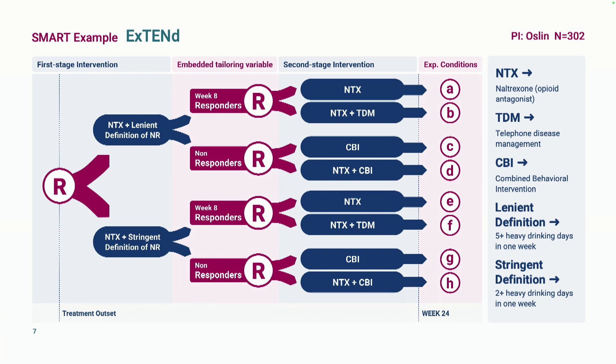If things can happen during any one of those eight weeks, some people are getting longer in stage two. The optimization criteria here is a very good 24-week evaluation. If participants never trigger non-response across all eight-week assessments — whatever definition they were assigned to — they're considered responders. For responders, the strategies are to either continue with naltrexone alone or to continue with naltrexone and add telephone disease management, which is a phone-based minimal clinical support with a human component.